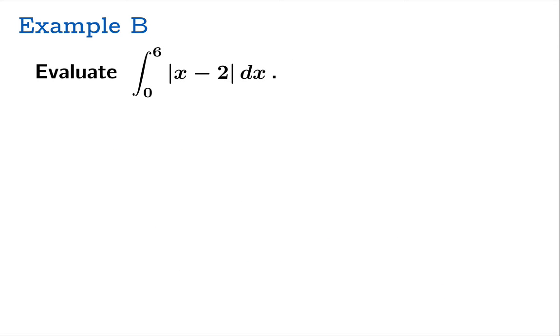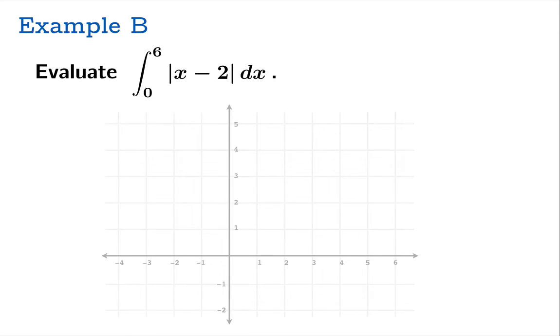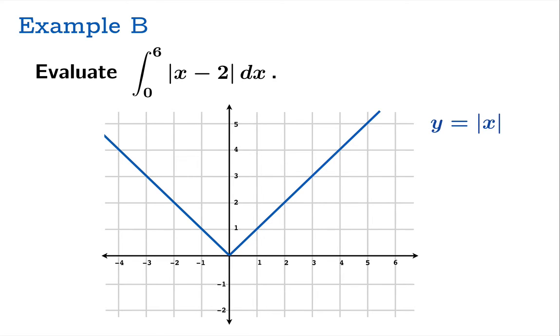How about this example? We're going to integrate the absolute value of x minus 2 on the interval from 0 to 6. We should really get our hands on this function here. If we took a graph of the absolute value of x and then shifted it to the right two units, well, that's our function. And we want to find the integral from 0 to 6. So we're looking for this signed area.